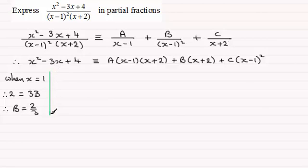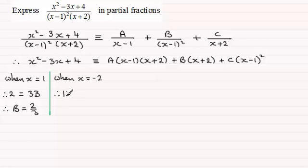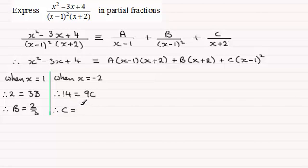Following on from what we've done, we choose another value of x that makes one of these brackets zero. If I make x plus 2 equal to zero, then x would have to be minus 2. Putting minus 2 into the left-hand side gives us 14. The first two terms drop out to zero, and putting minus 2 in here gives us minus 3, which squared gives 9, times C. So dividing both sides by 9 gives us C equals 14 ninths.